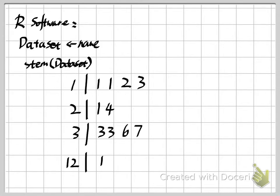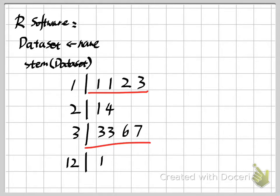Before the end of this video, I want to talk about the advantages and disadvantages of the stem and leaf plot. One important advantage is that it shows the general shape of our distribution. You can see for each stem how many data points there are — for example, the first stem has more data, the third stem also has four numbers, while the other two stems have much less data.